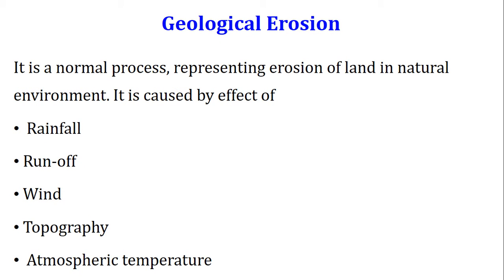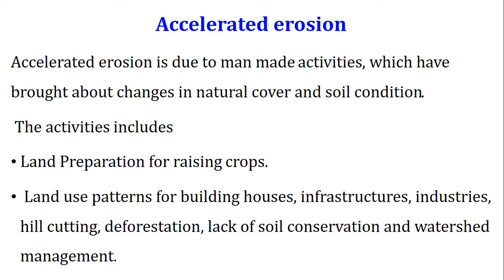Geological erosion is a normal process representing erosion of land in the natural environment. It is caused by the effects of rainfall, runoff, wind, topography, and atmospheric temperature.